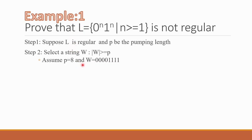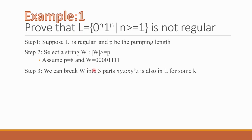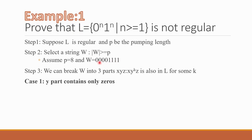Step 3: We can break w into 3 parts — x, y, and z — such that xy^k z is also in L for some k. So we break the string 0000 1111 into x, y, z. We will make three cases. Case 1: the y part contains only 0s.